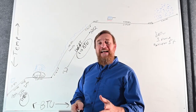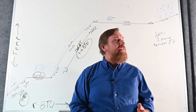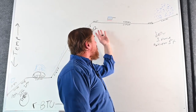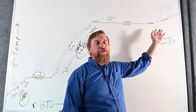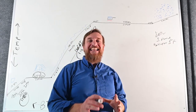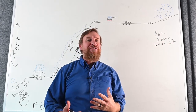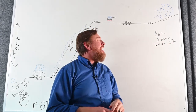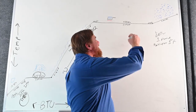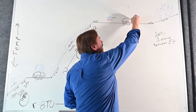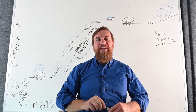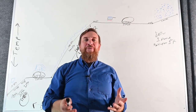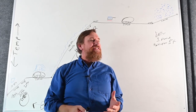Our next step is also simple. Because it's changing state from 212°F liquid to 212°F vapor, it's latent heat — we can't measure that with a thermometer. It's going to be 970 BTUs.